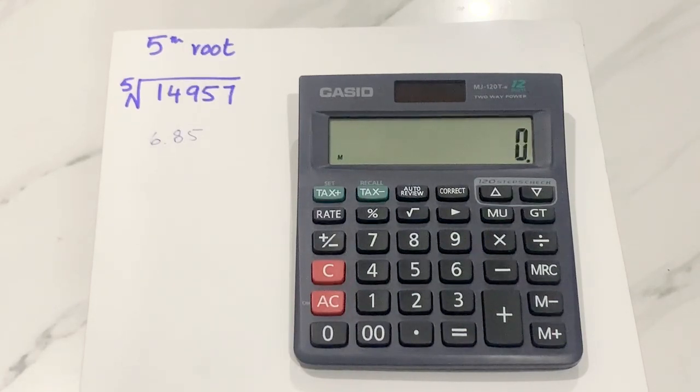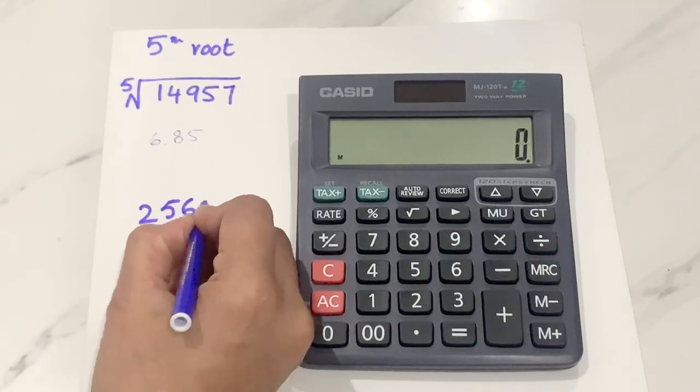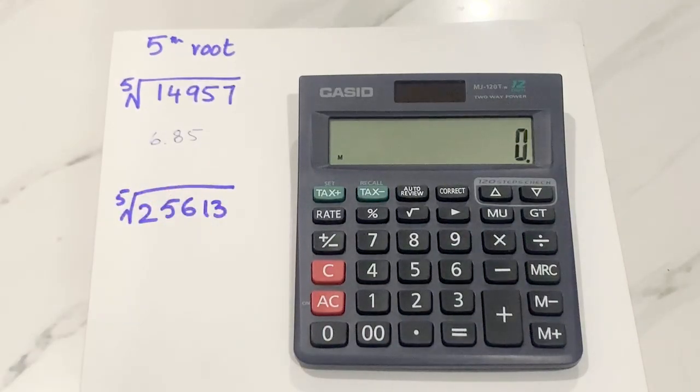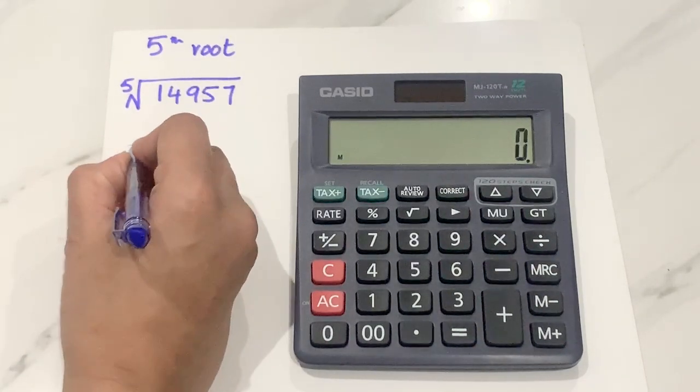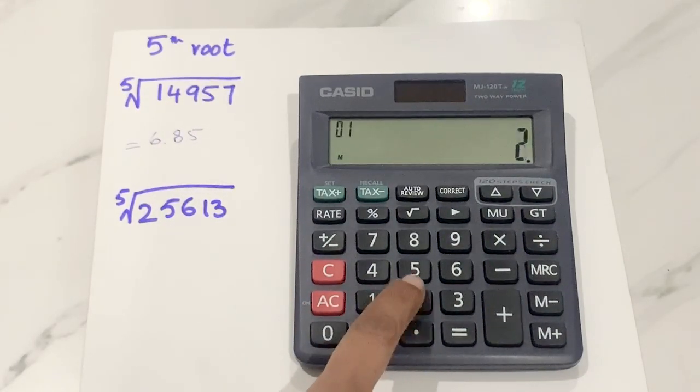So now let's move on to another example. Let's suppose I have another number. That is 25,613. And I want to find out the fifth root of this number. So let's start. First of all, I will write down my number.